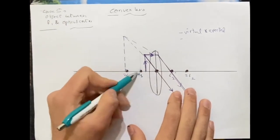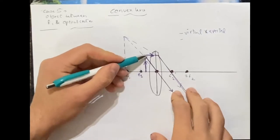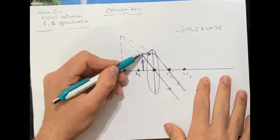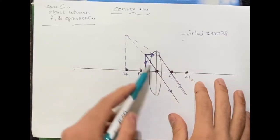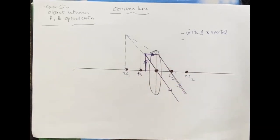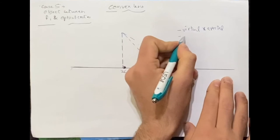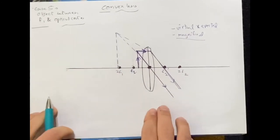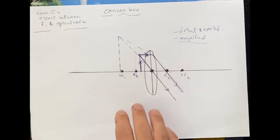In the third case, the object is placed between F1 and the optical center. The first rule says the ray from the top of the object goes parallel to the principal axis and refracts through the focus. The second ray goes from the top of the object straight to the optical center. The image is formed behind the object and is magnified. The properties are: virtual, erect, and magnified.